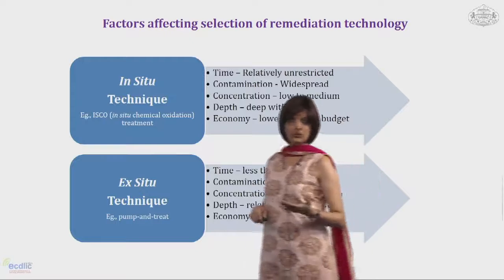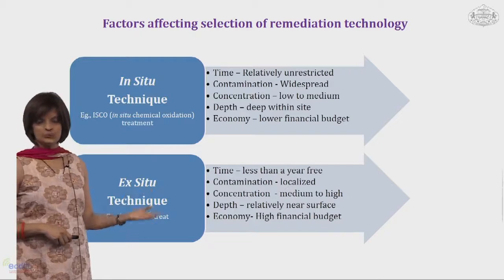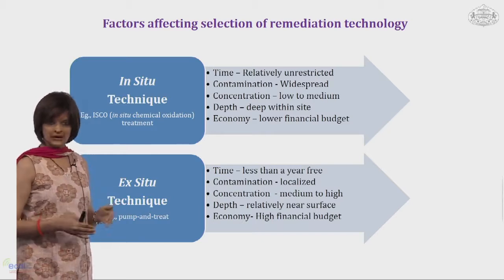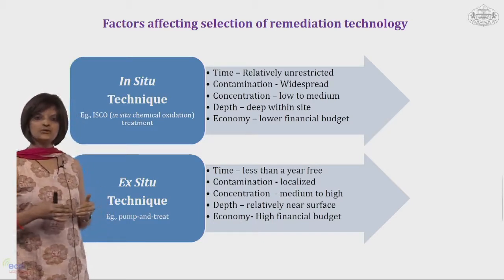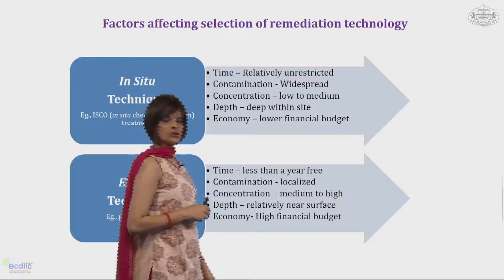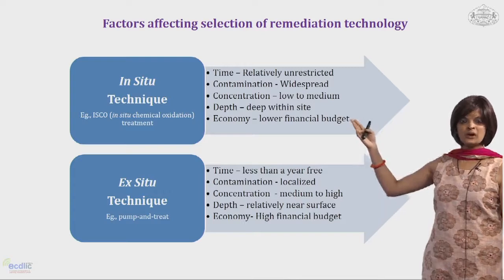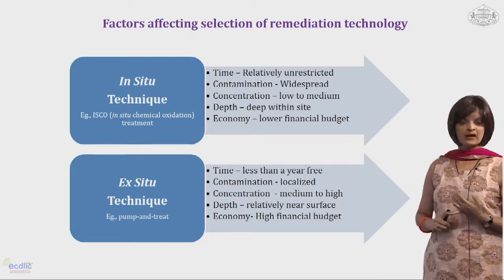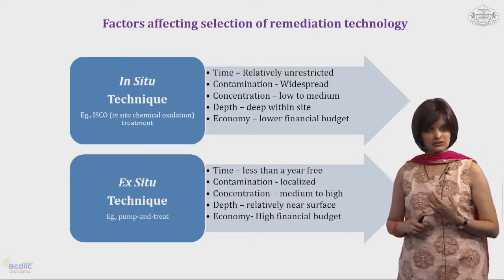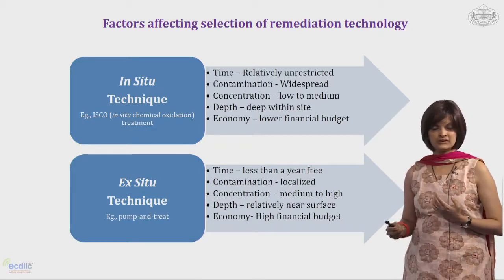There are two types of techniques in bioremediation. The first is in-situ — remediating the site at its own place. The second is ex-situ — doing the action at some other place. There are different types under both. For in-situ, for example, there is ISCO which is in-situ chemical oxidation treatment. For ex-situ, pump and treat is a well-known method, though due to some disadvantages, it has not been widely implemented in the current age.